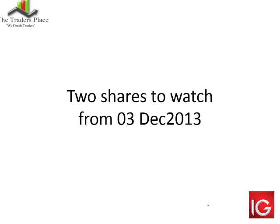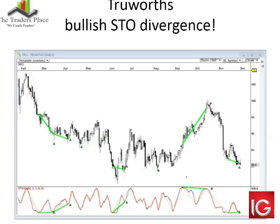Two shares gave buy signals this morning. The first is Trueworths — we have an oversold stochastic, it's given us divergence and confirmed the divergence. The price is sitting on a small support level, pretty close to an average support based on history. You can wait for price to break above resistance, split your entries taking half now and half on a break higher. The stop loss would simply be a close below that support in the 80.50 area.